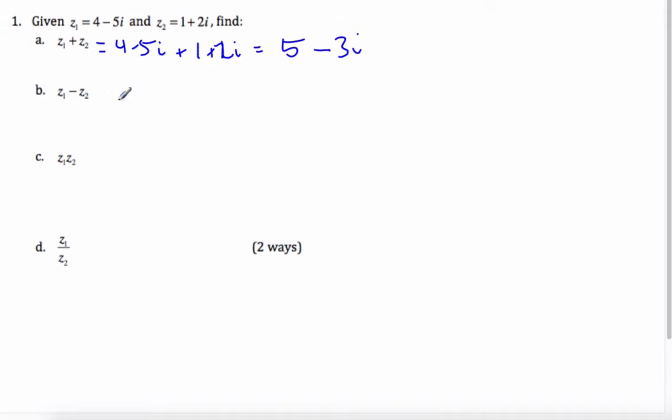As with subtraction, it's 4 minus 5i minus 1 plus 2i, which ends up being 3 minus 7i.